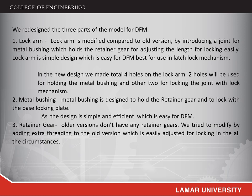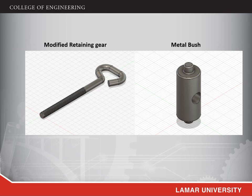The second redesigned part is the metal bushing. The metal bushing is designed to hold the retainer gear and lock with the base locking plate. The design is simple and efficient, making it easy to manufacture. The third redesigned part is the retainer gear. The old version does not have any retainer gear. We modified it by adding extra threading, which makes it easy to adjust for locking under all circumstances.